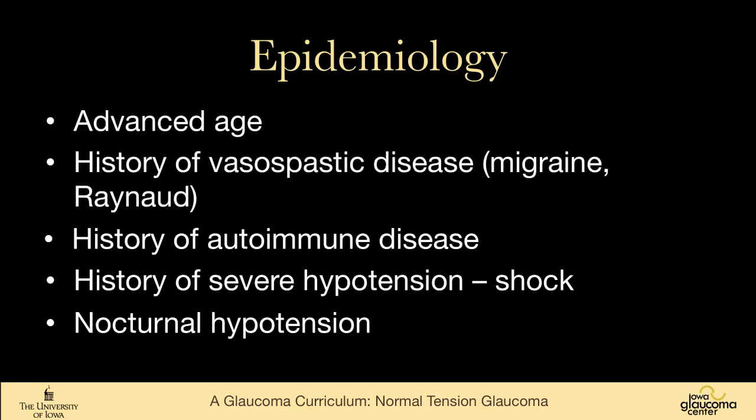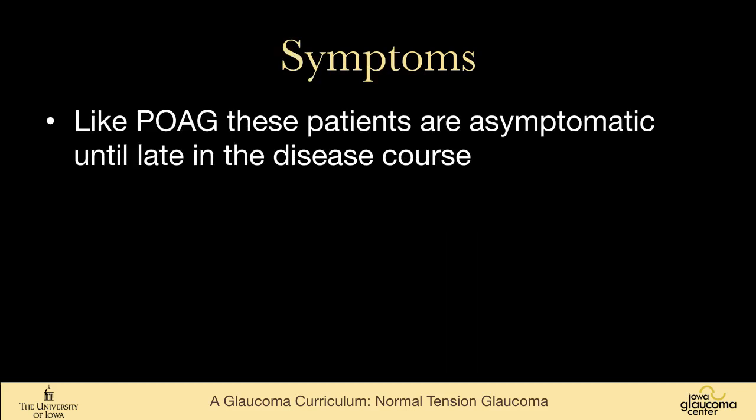There are a lot of things that are associated with normal tension glaucoma: advanced age, history of vasospastic disease such as migraine headache or Raynaud phenomenon. Some people describe an autoimmune association. Patients can have a history of severe hypotension or shock, and nocturnal hypotension from perhaps being over-medicated for systemic blood pressure issues.